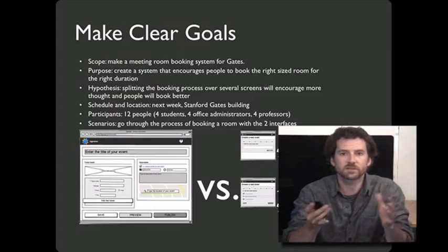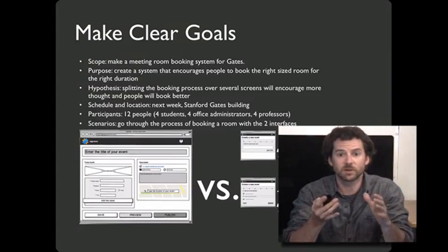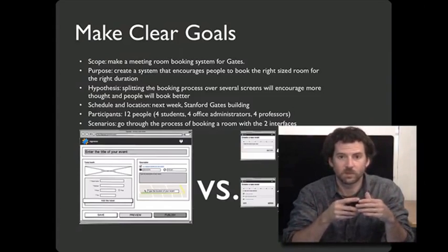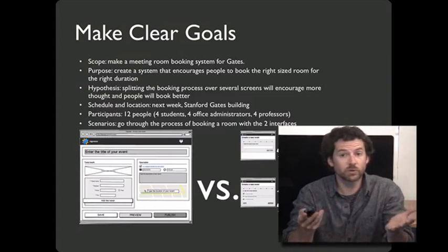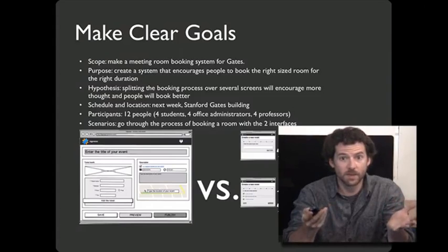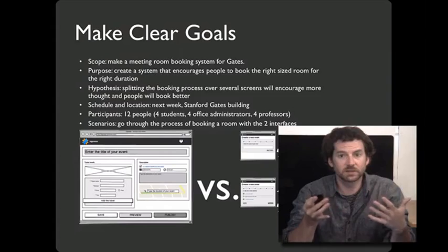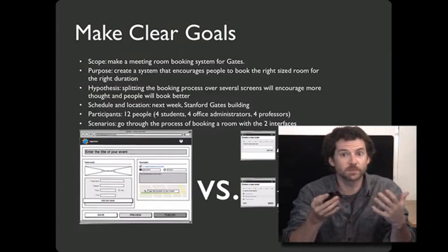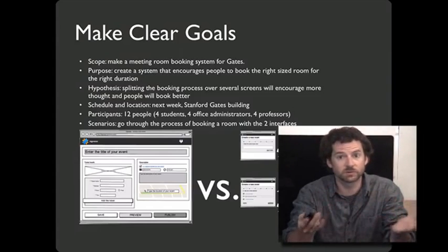Set up your study so that you can see whether people's behavior supported your hypothesis. Book an appropriate place — if the interface will be used in a quiet room, book a quiet room; if it's going to be used at a train station, test it at a train station. Figure out who you're going to recruit, how, and how many people. Come up with scenarios that are realistic and ideally something participants can be motivated to care about, or at least put themselves in the shoes of the actual user.